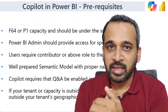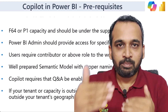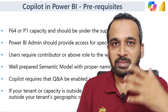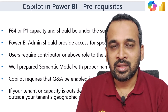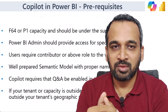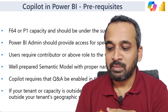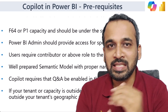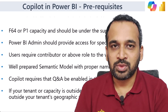You also need a well-prepared semantic model with proper naming conventions as per Microsoft's standard documentation. There are certain metrics available from Microsoft's standard documentation — I will mention the link in the description. Additionally, Copilot requires that Q&A be enabled in the semantic model dataset settings. When building a Power BI report, you need to enable the settings for Q&A visuals.